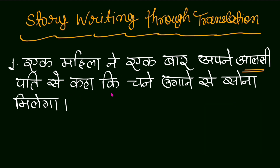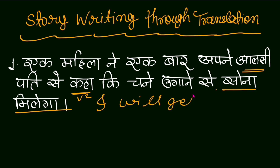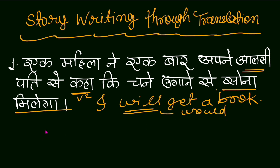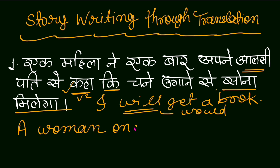A woman once told her lazy husband that growing chickpeas would bring gold. Friends, what tense is this? It's simple past tense — 'said' (verb 2 is used). Now 'gold will come' is simple future tense — like 'I will get a book.' But here, 'will' must be changed to 'would' because it is connected with 'that' (कि) and the main clause is in past tense. So we write: 'A woman once said to her lazy husband that growing chickpeas would bring gold.'